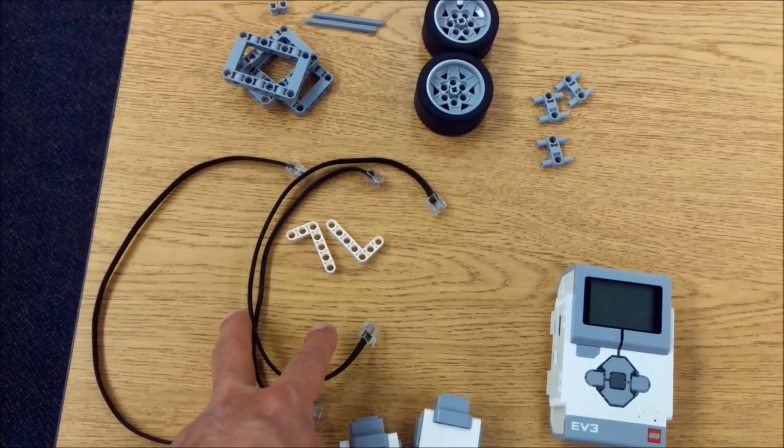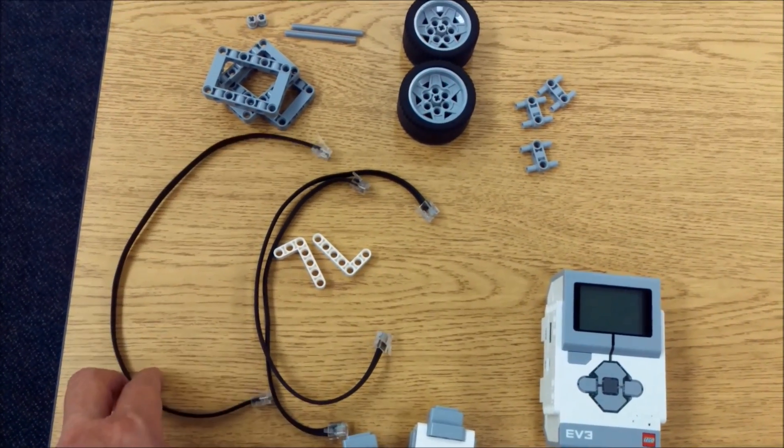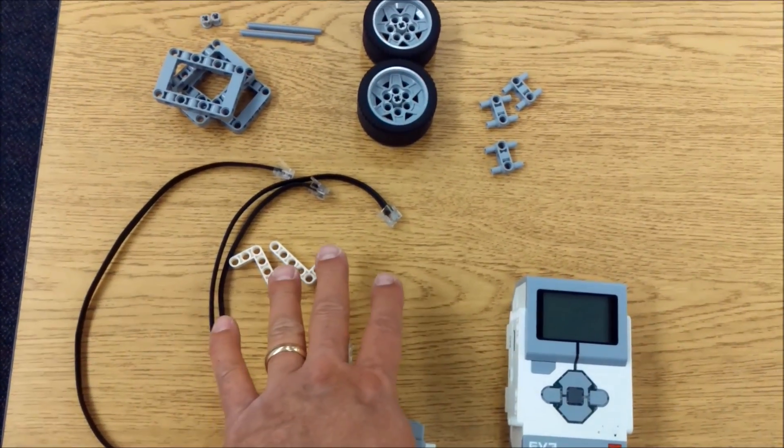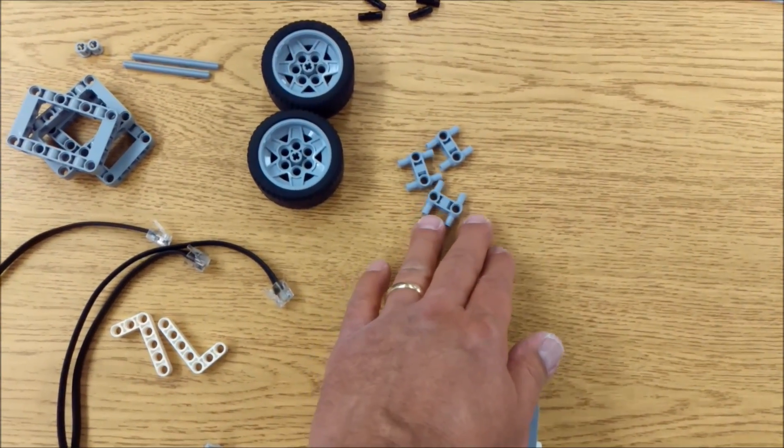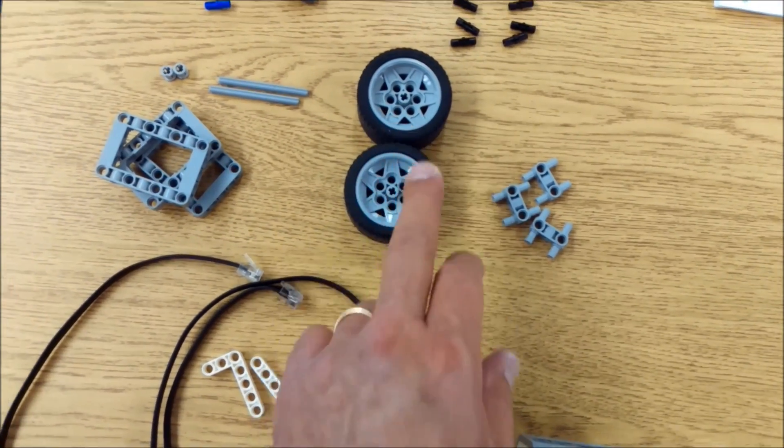For cables, I have two of the 10 inch, one of the 14 inch cables. Two of these L pieces, they can be white or gray, it doesn't matter. Three of these, what I call the H pieces. Your two wheels.